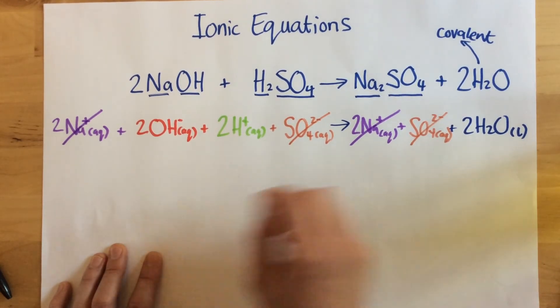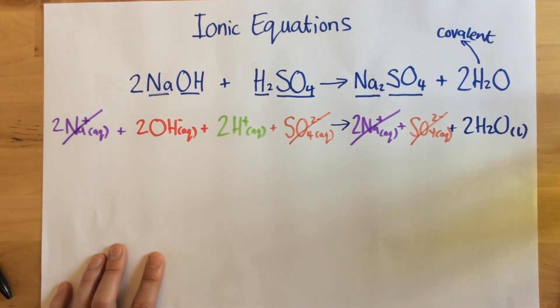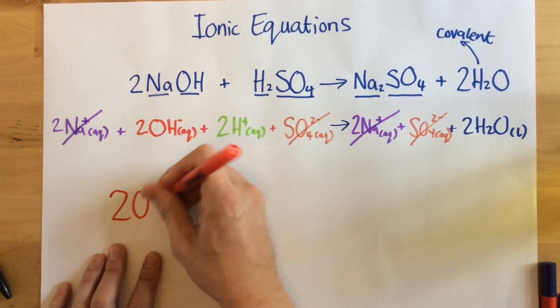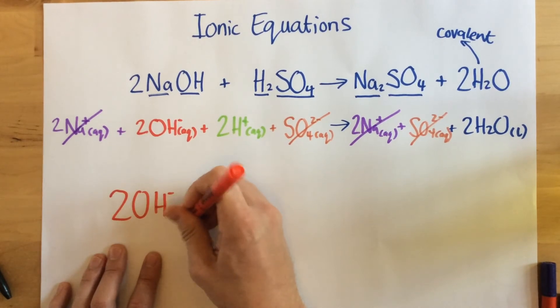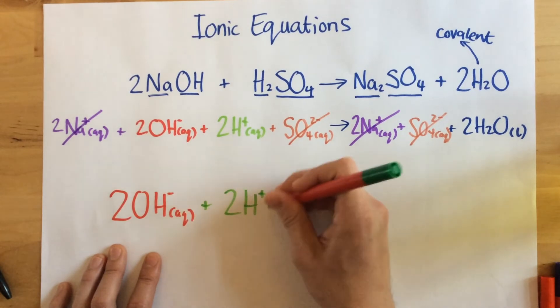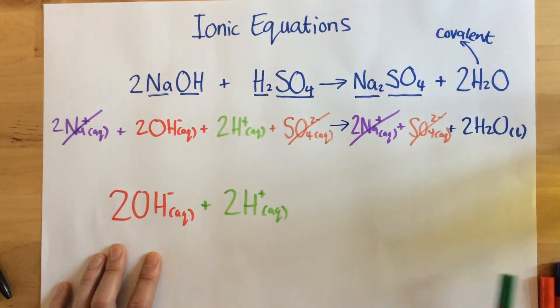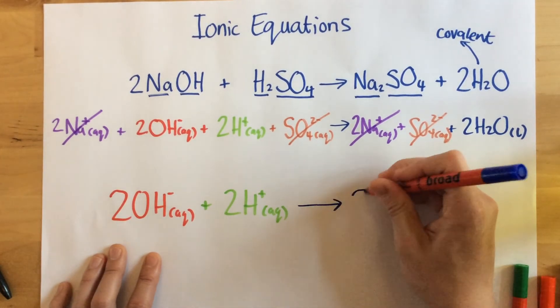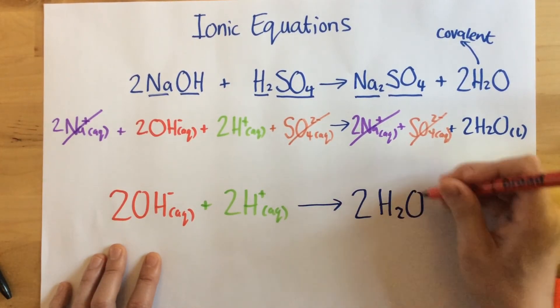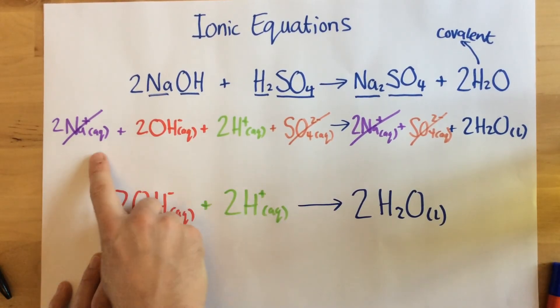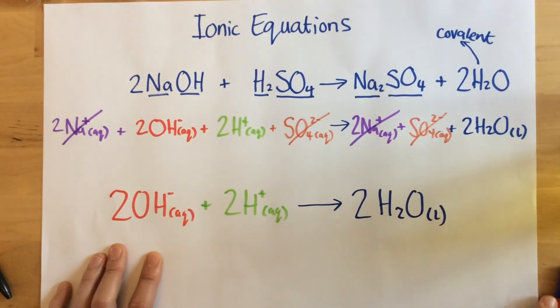So that shows me what I've got left. This is just my completed equation. All I need to do now is I take what I've got left. So there's my 2OH-, plus my 2H+, and I've formed this here, 2H2O, which is a liquid.